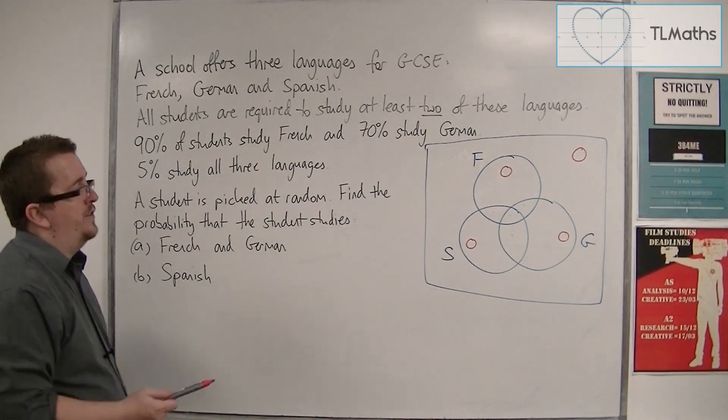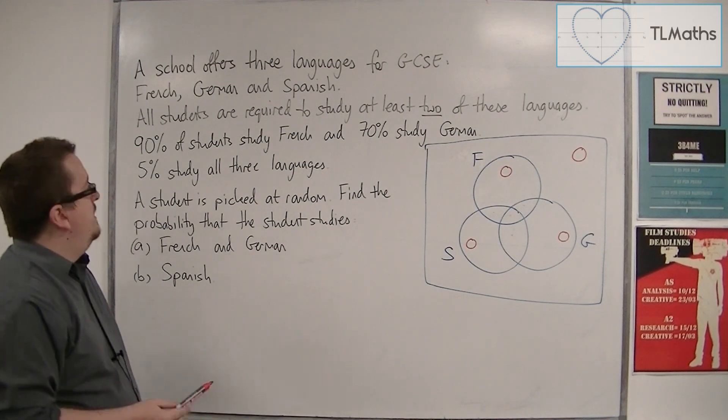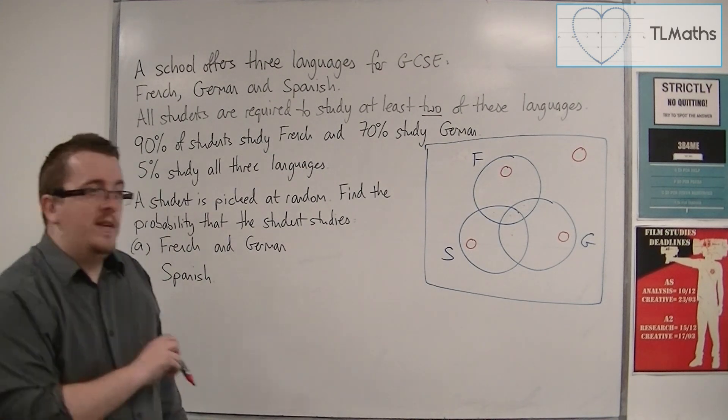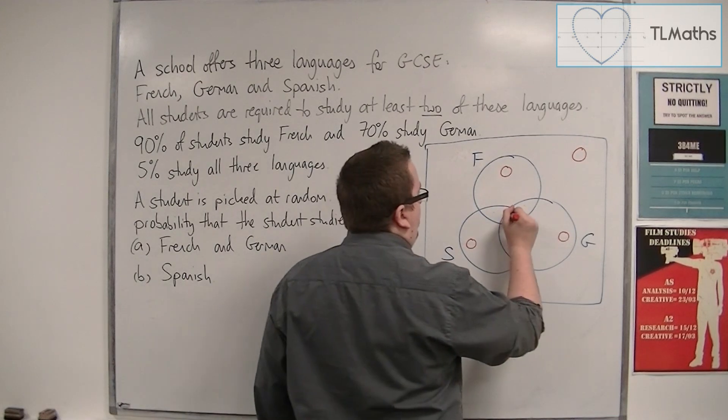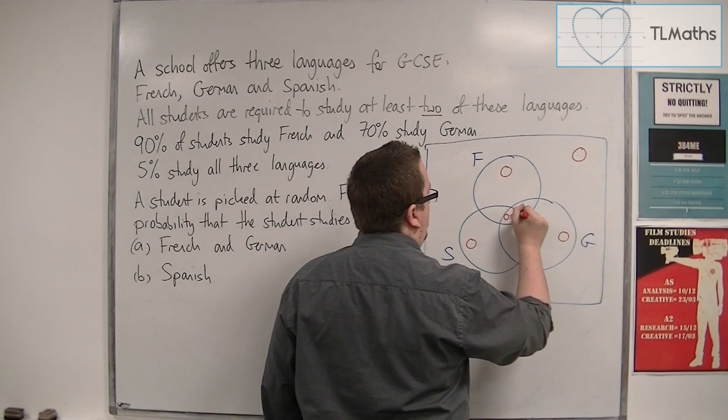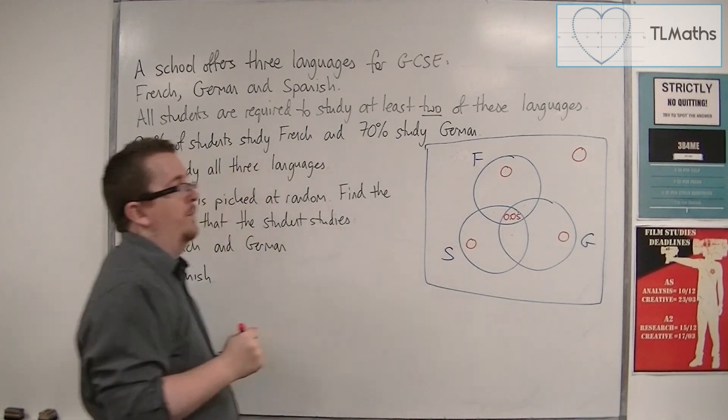Now, we know that 5% study all three languages. And so this section can be 0.05. Okay, 5%.